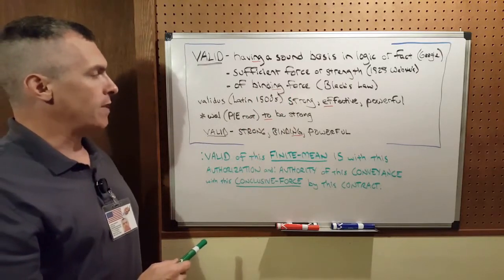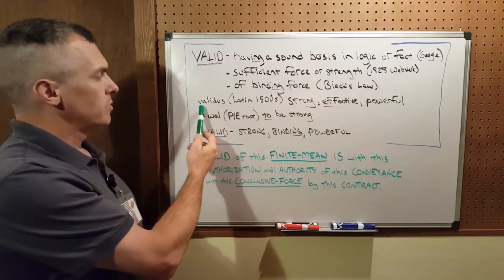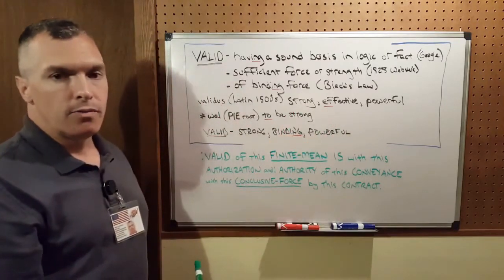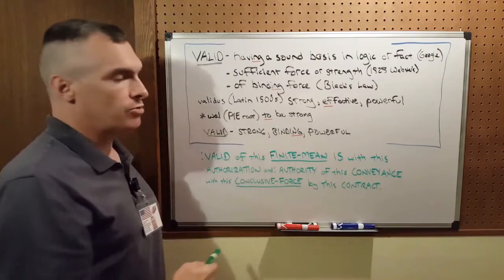Parsing the word, I found that in the 1500s there was a Latin word called validus, which meant strong, effective, and powerful, which came from the PIE root w-a-l, which means to be strong.